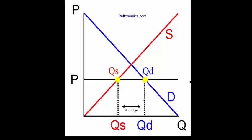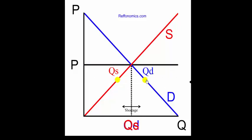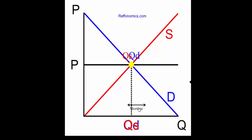If the price is allowed to adjust to the equilibrium price, the quantity demanded will go down, the quantity supplied will go up, and there will no longer be a shortage in the marketplace.